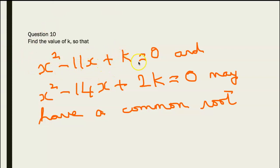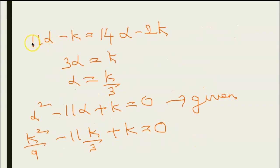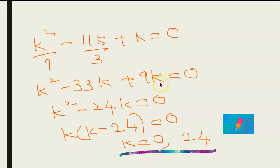Find the value of k so that x² - 11x + k = 0 and x² - 14x + 2k = 0 have a common root. Let the common root be alpha. So alpha² - 11alpha + k = 0 and alpha² - 14alpha + 2k = 0. Equating alpha² from both: 11alpha - k = 14alpha - 2k, giving alpha = k/3. Substituting back: k²/9 - 11k/3 + k = 0, or k² - 24k = 0, so k(k - 24) = 0, meaning k = 0 or k = 24.